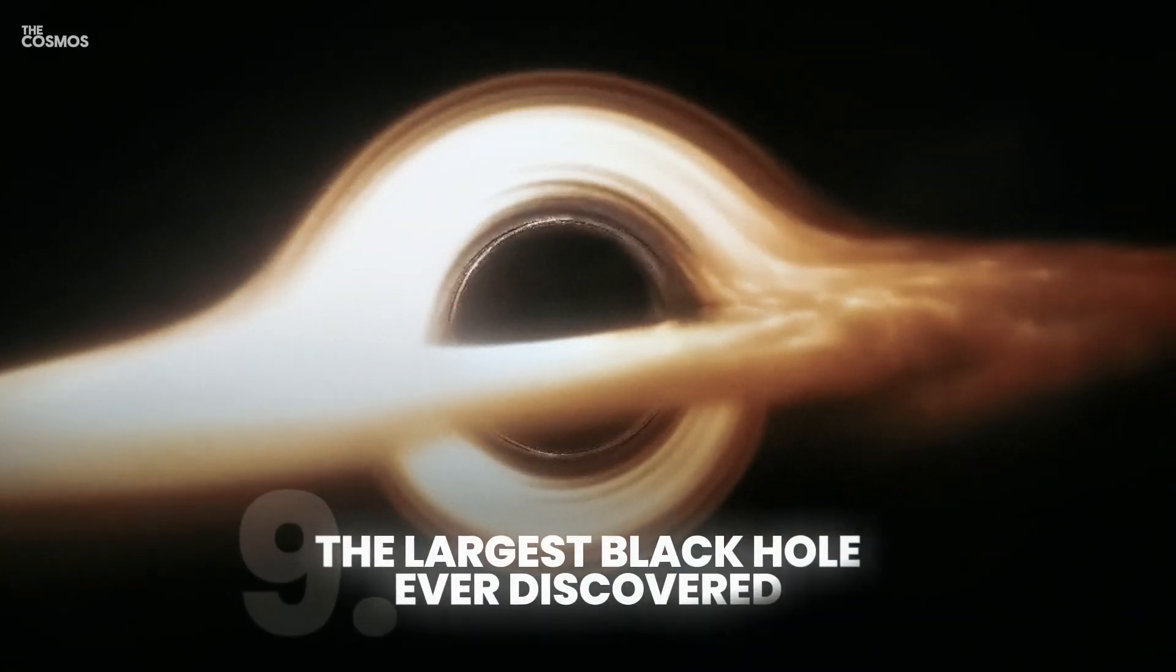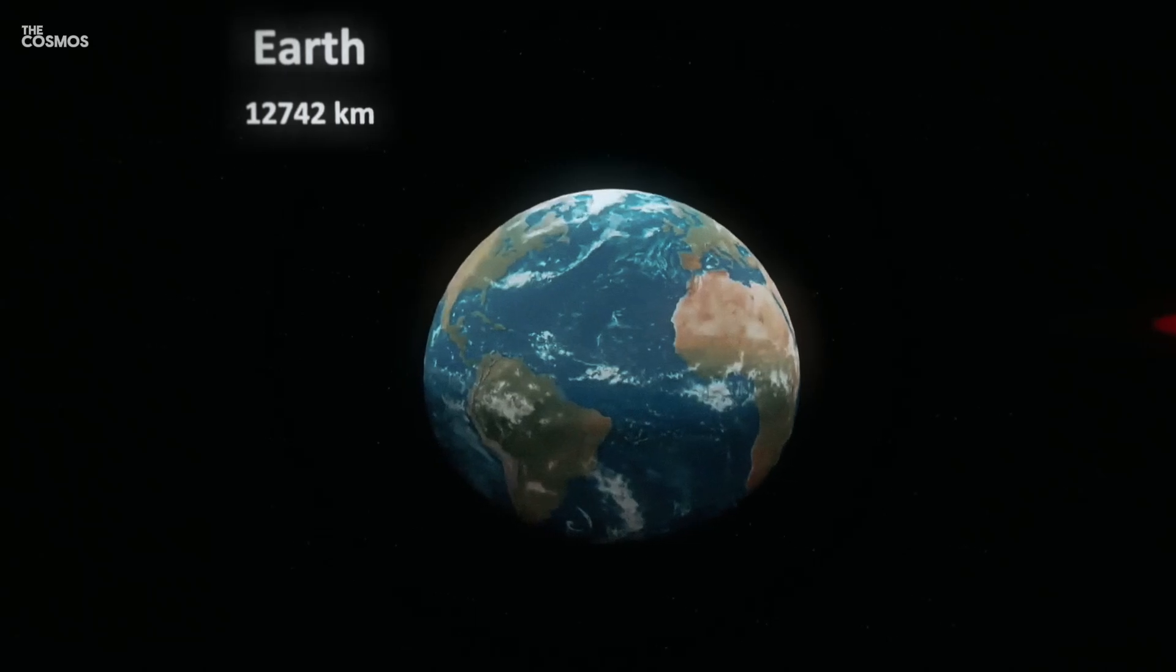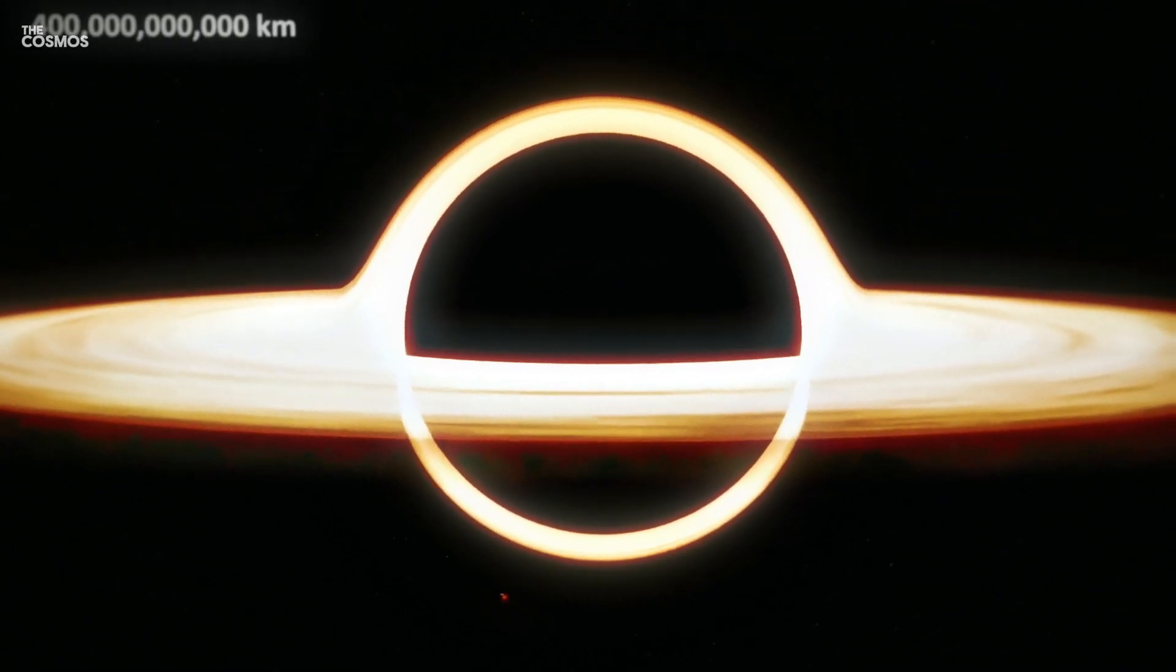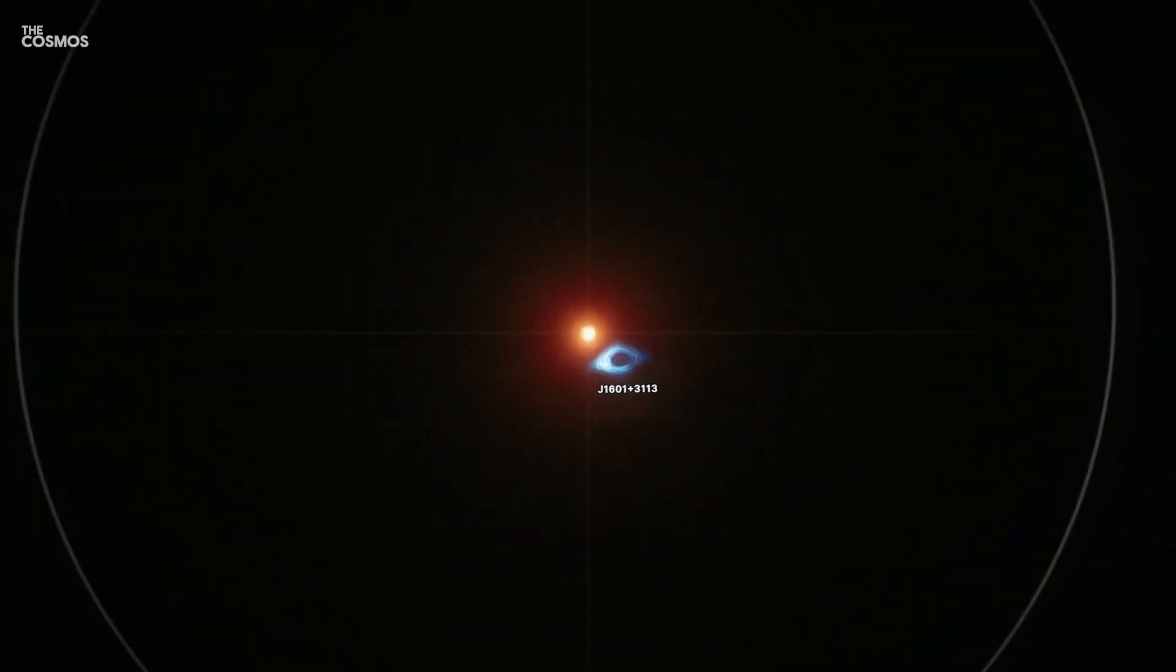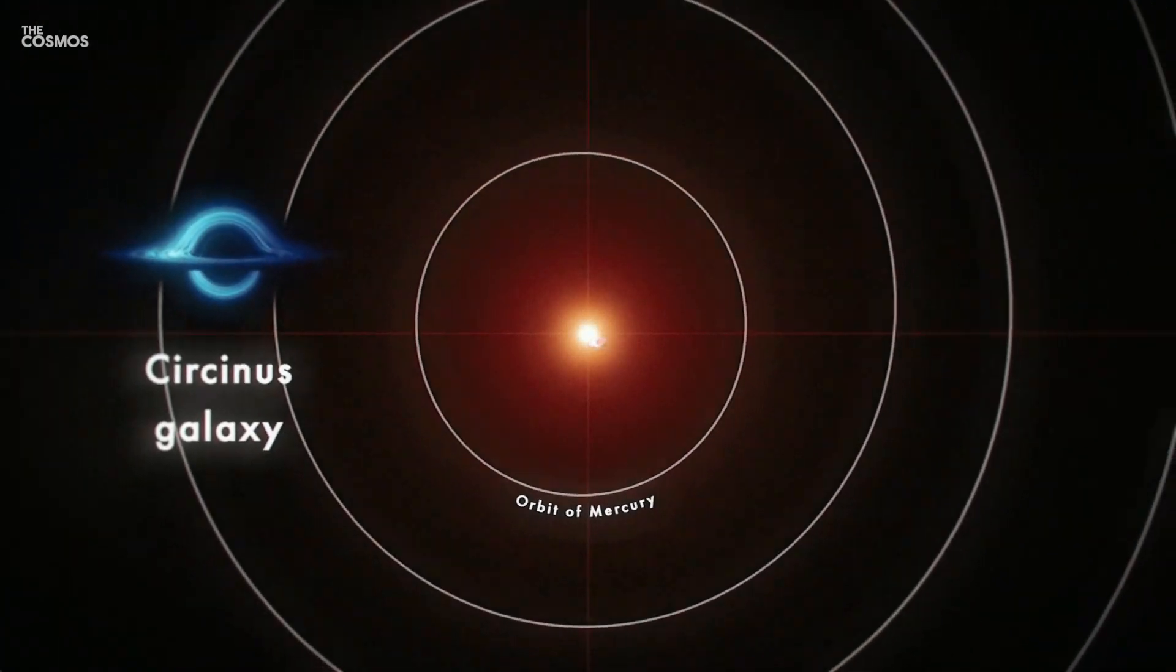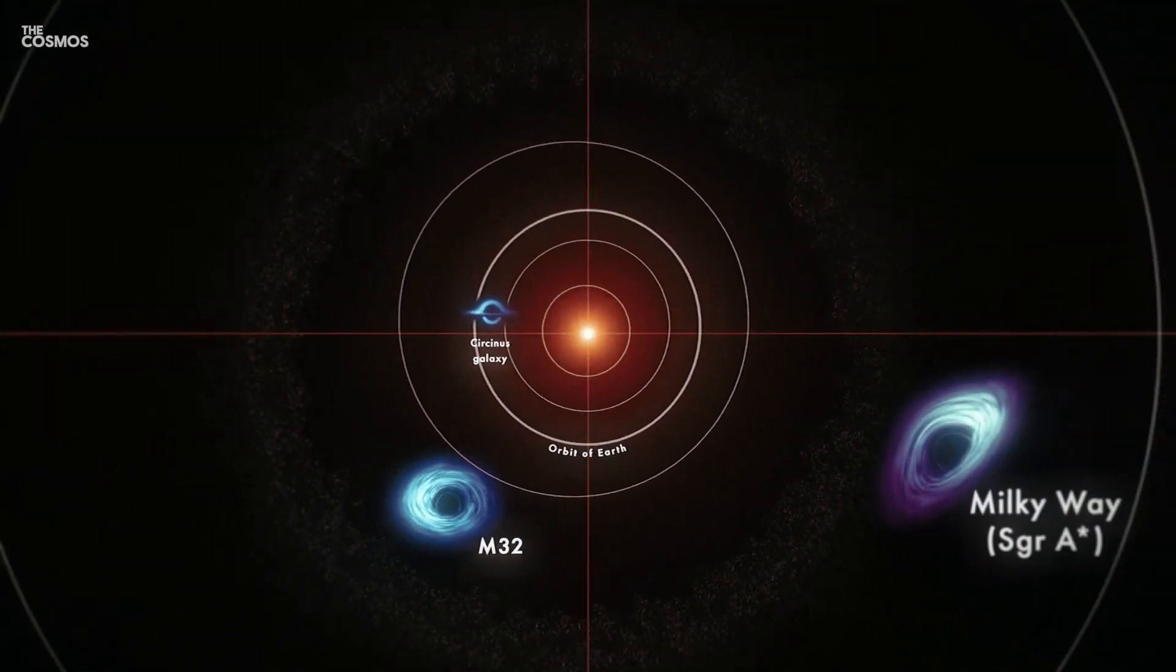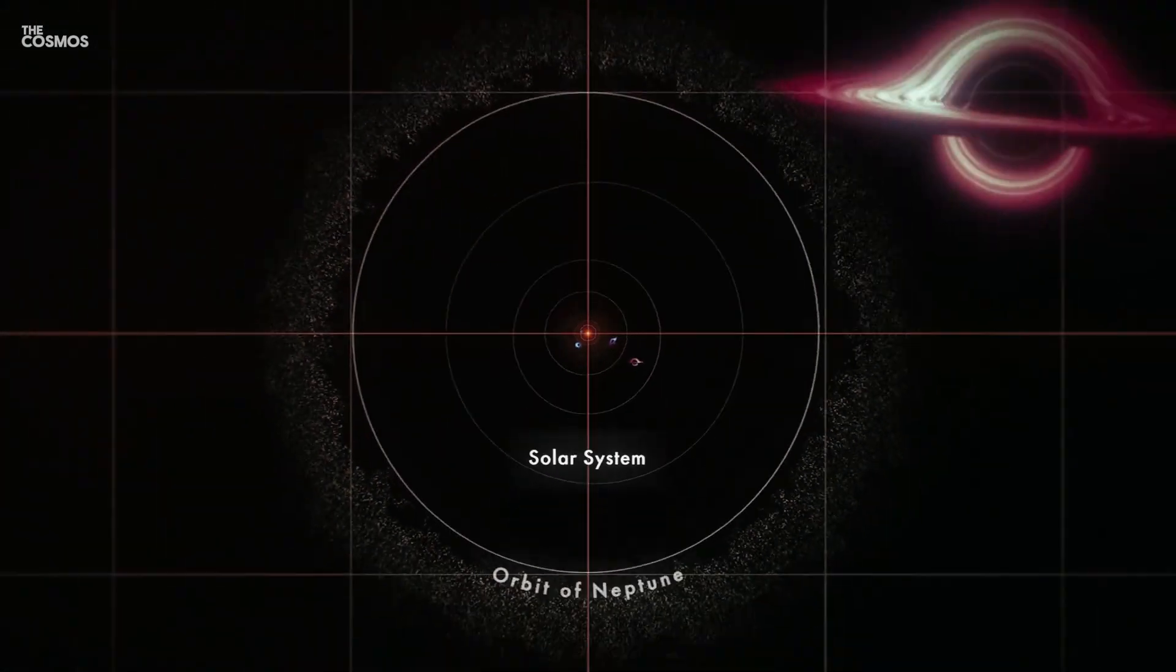The largest black hole ever discovered. The largest black hole known is TON 618, a supermassive black hole located in a distant galaxy. It has an estimated mass of 66 billion times that of our sun, making it an absolute giant among black holes. Its sheer size and mass challenge our understanding of black hole growth and the dynamics of galaxies, providing a fascinating puzzle for astronomers to solve.